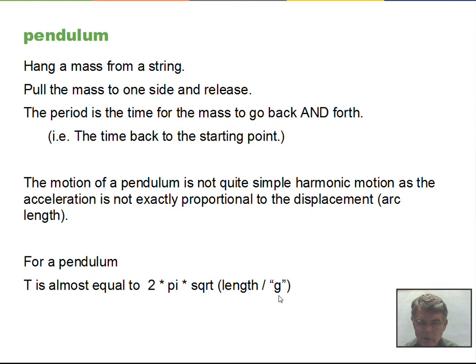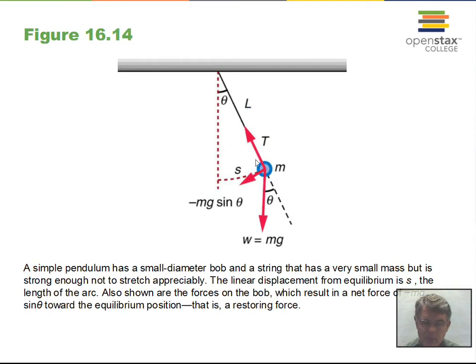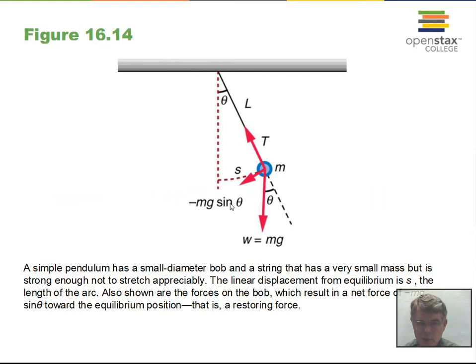Looking at the forces on a pendulum: the weight mg acts downward and tension acts along the string. The component of mg perpendicular to the string — mg sinθ — acts as the restoring force back toward the equilibrium position. This is a variable force because θ changes, and the arc length s = rθ. The displacement is not strictly proportional to the acceleration because of the sine function.